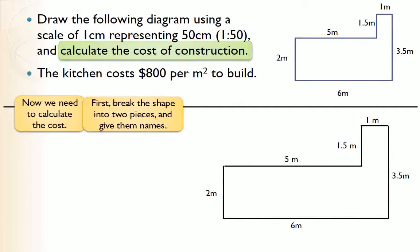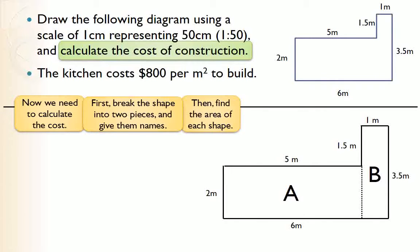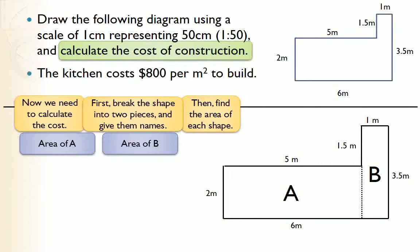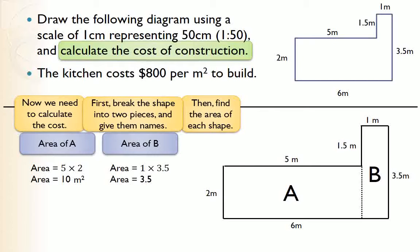This is not a neat simple shape — it's two rectangles packed together, so we need to break it into two pieces and name them. I've split it into part A and part B. Area of A: it's a rectangle, so length times width. This 6 meters goes end to end, but we want just the 5 meters for rectangle A, so it's 5 times 2 equals 10 square meters. Area of B: 1 times 3.5 equals 3.5 square meters.